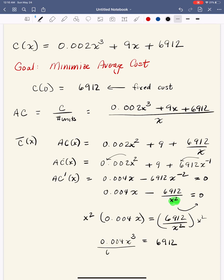So now we have 0.004 X to the third equals 6912. And now dividing both sides by 0.004. I was going to go over here because I actually have a little bit more room. So this would give us, and I urge you to use your calculators as well,